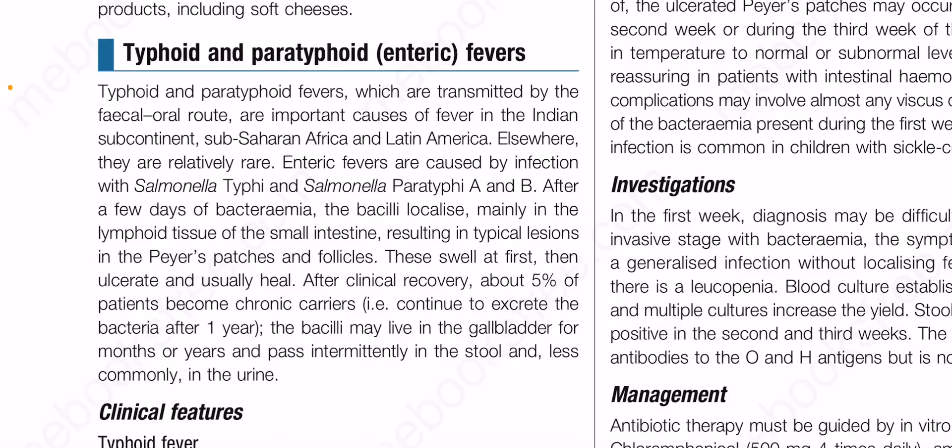After a few days of bacteremia, the bacteria are localized mainly in the lymphoid tissue of the small intestine, resulting in typical lesions in the Peyer's patches and follicles. These swell at first, then ulcerate, and usually heal after clinical recovery. About five percent of patients become chronic carriers.